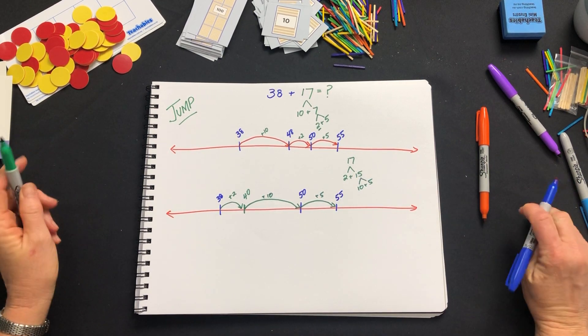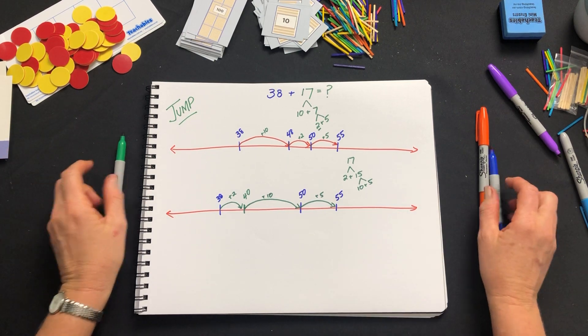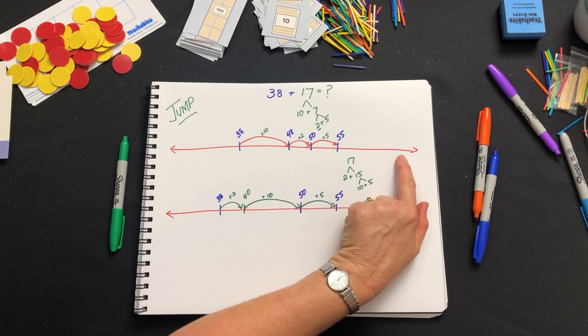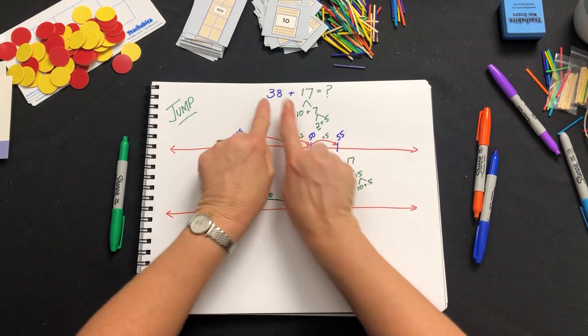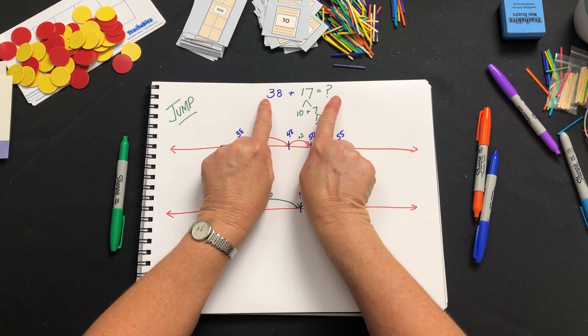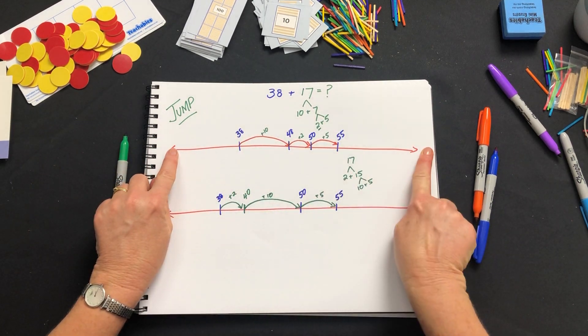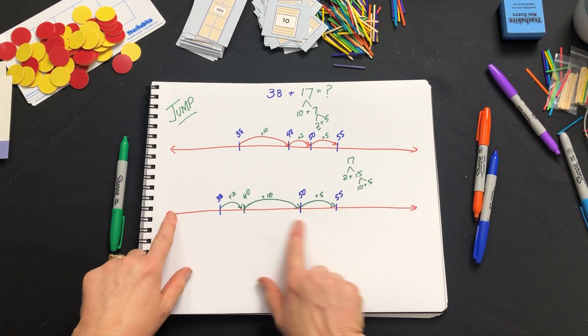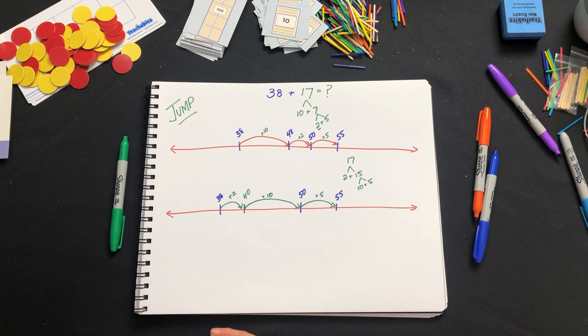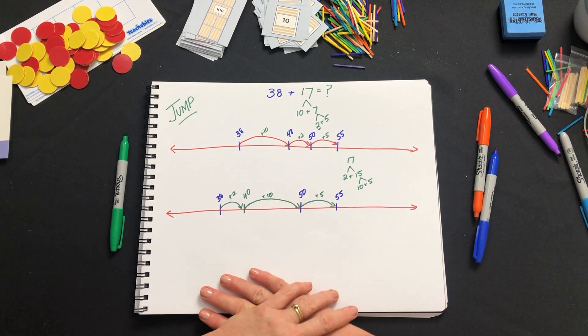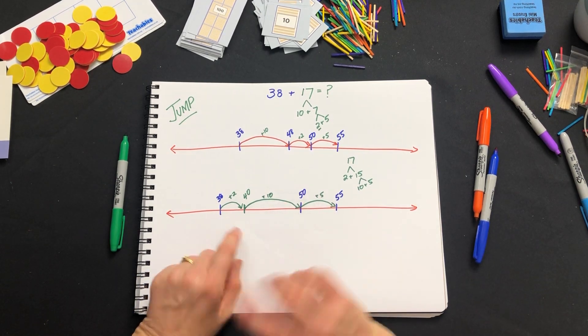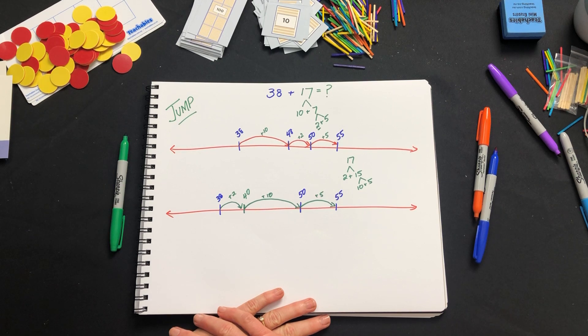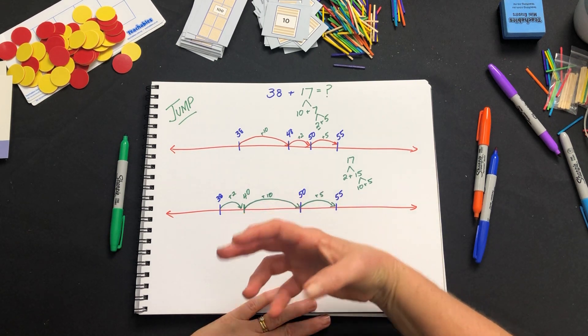And that's the jump strategy. What we're aiming to do here is to use the representation to build up a student's visualization. Our ultimate aim is for them to be able to do this in their mind but they will actually be seeing one of these processes as they go. Have a look at how your student prefers to do the jumps on the jump strategy and they can discuss the benefits of each of the different ways of going about it to choose their preferred method.